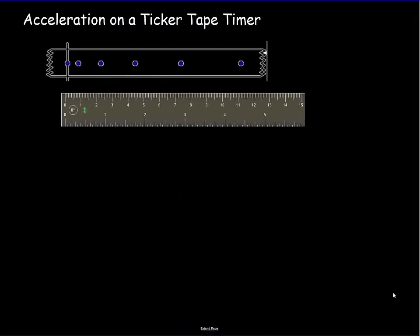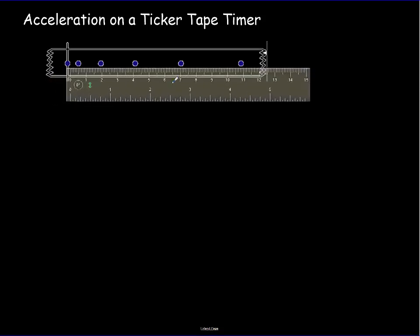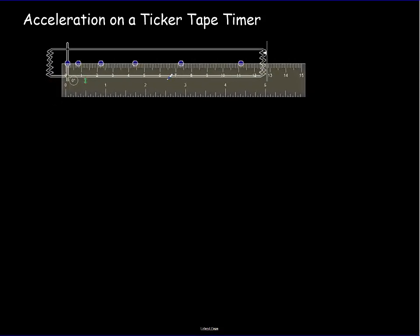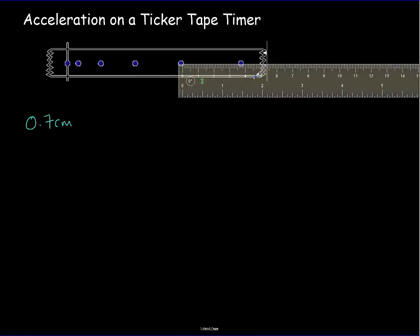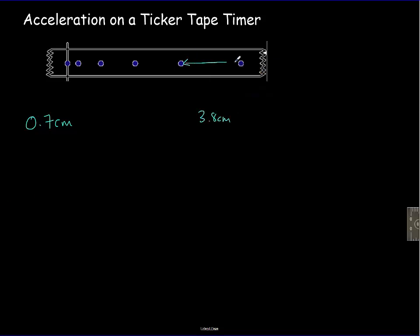To calculate acceleration from a ticker tape timer, we need an initial and final velocity. Moving a ruler to measure the distance between the first and second dot gives about 0.7 centimeters. Measuring the last pair of dots gives about 3.8 centimeters. So the initial distance is 0.7 cm and the final distance is 3.8 cm.